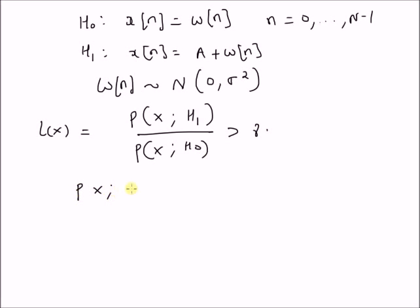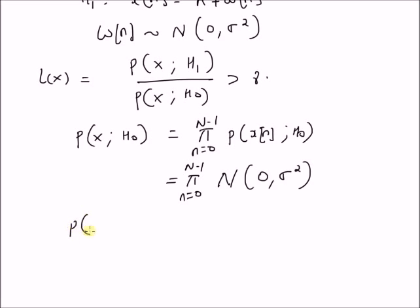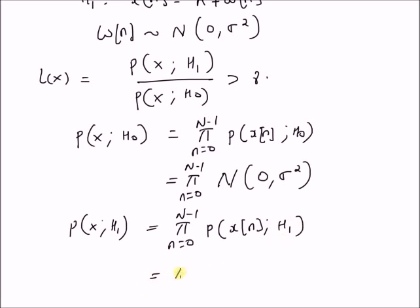The probability distribution of the observation vector x under the null hypothesis is equal to the product from n=0 to N-1 of the distribution of x(n) under H0, which is a normal distribution with mean 0 and variance sigma squared. Under the alternate hypothesis, the distribution of x under H1 is the product from n=0 to N-1 of the distribution of x(n) under H1, which is a normal distribution with mean A and variance sigma squared.